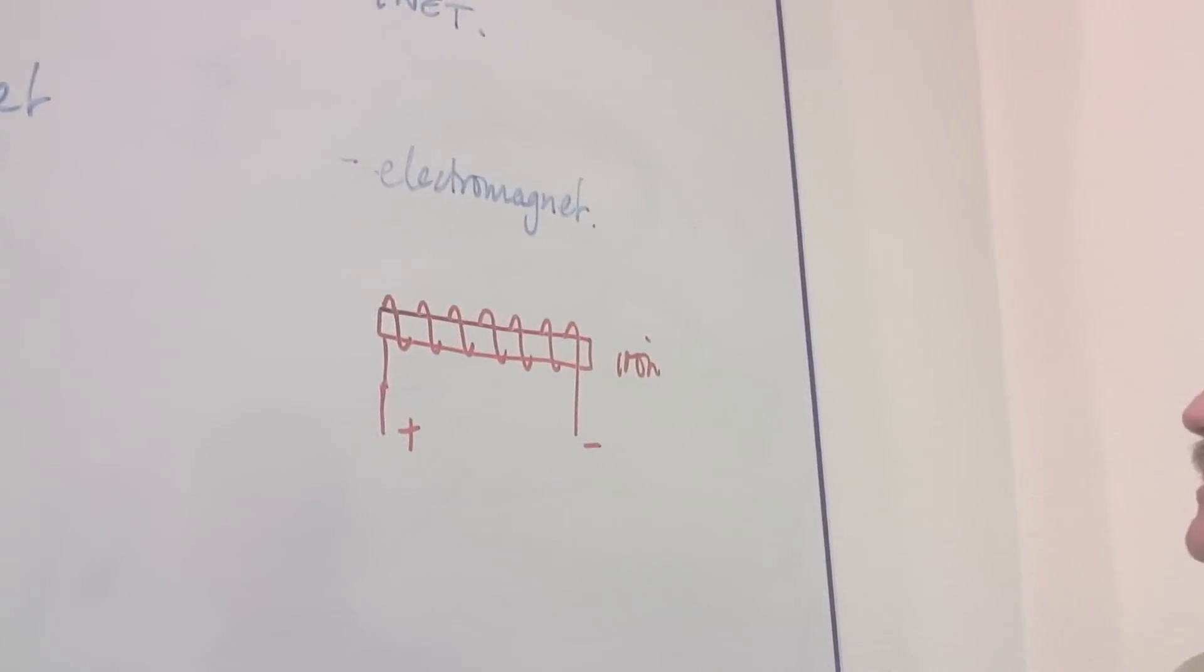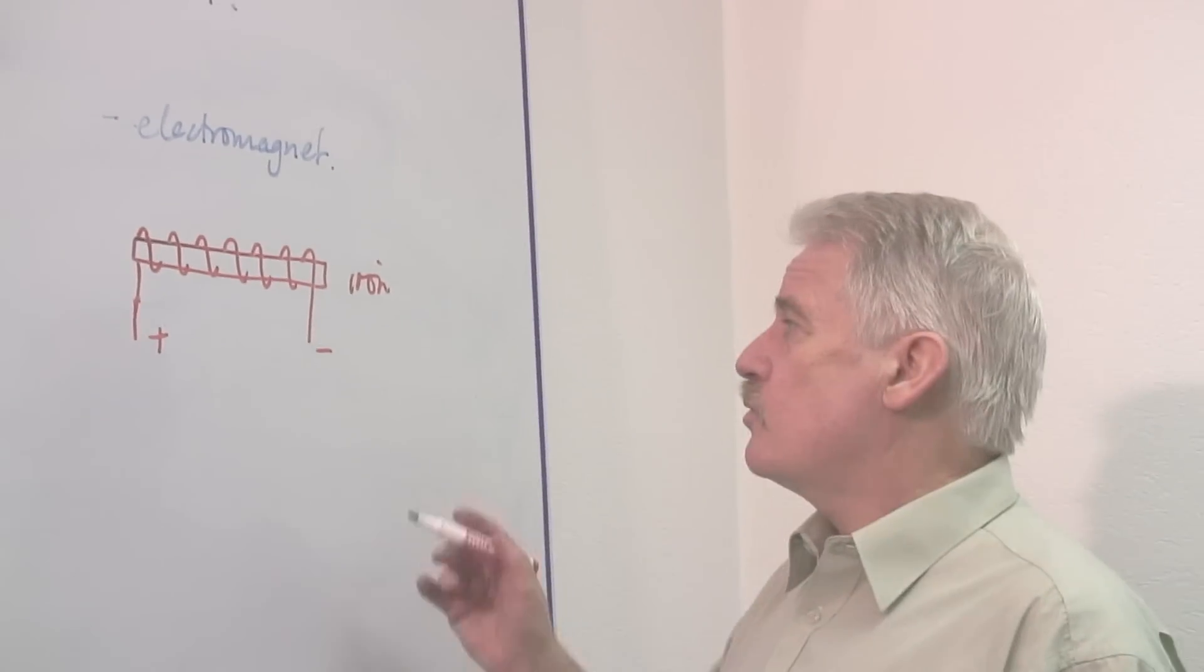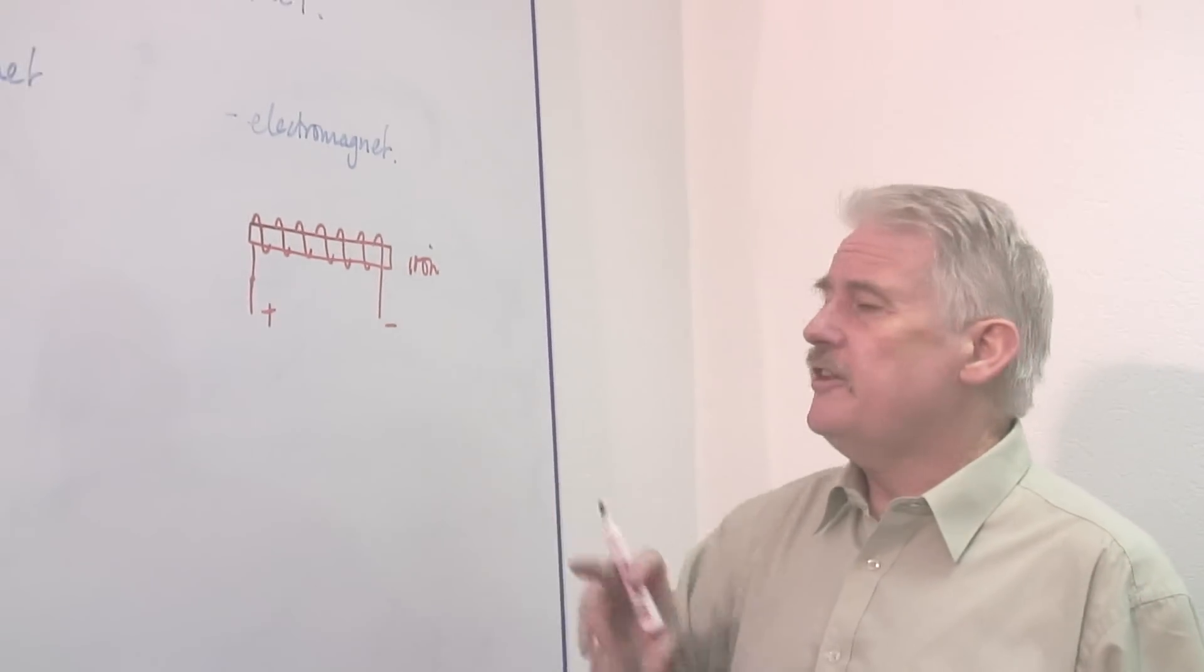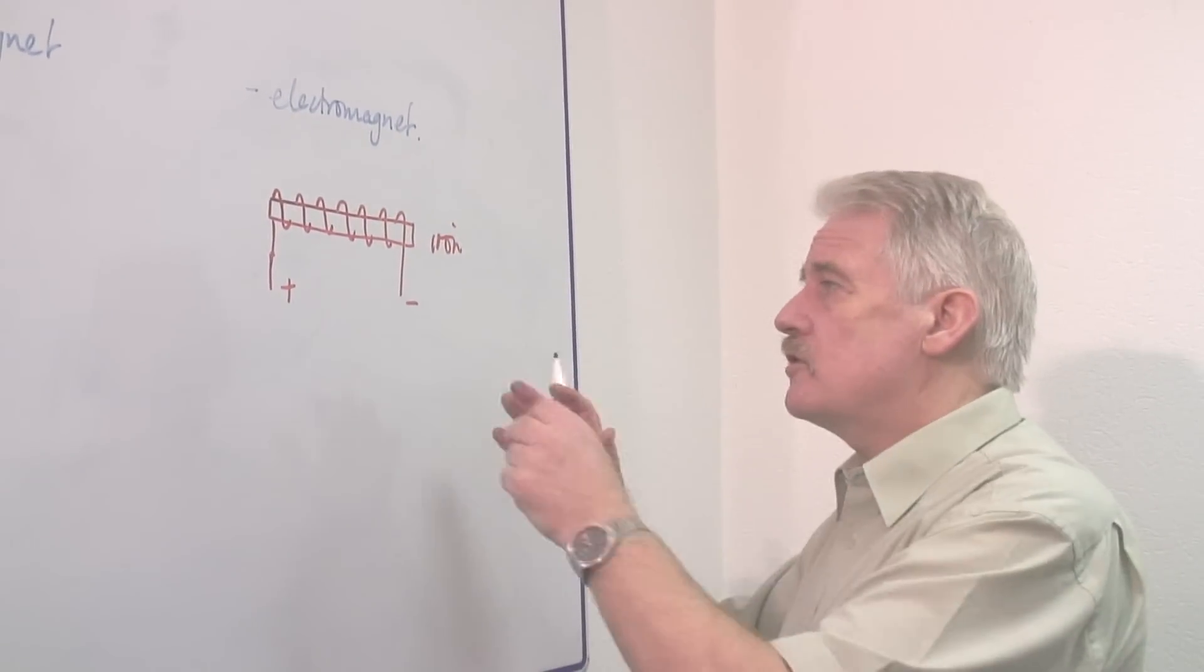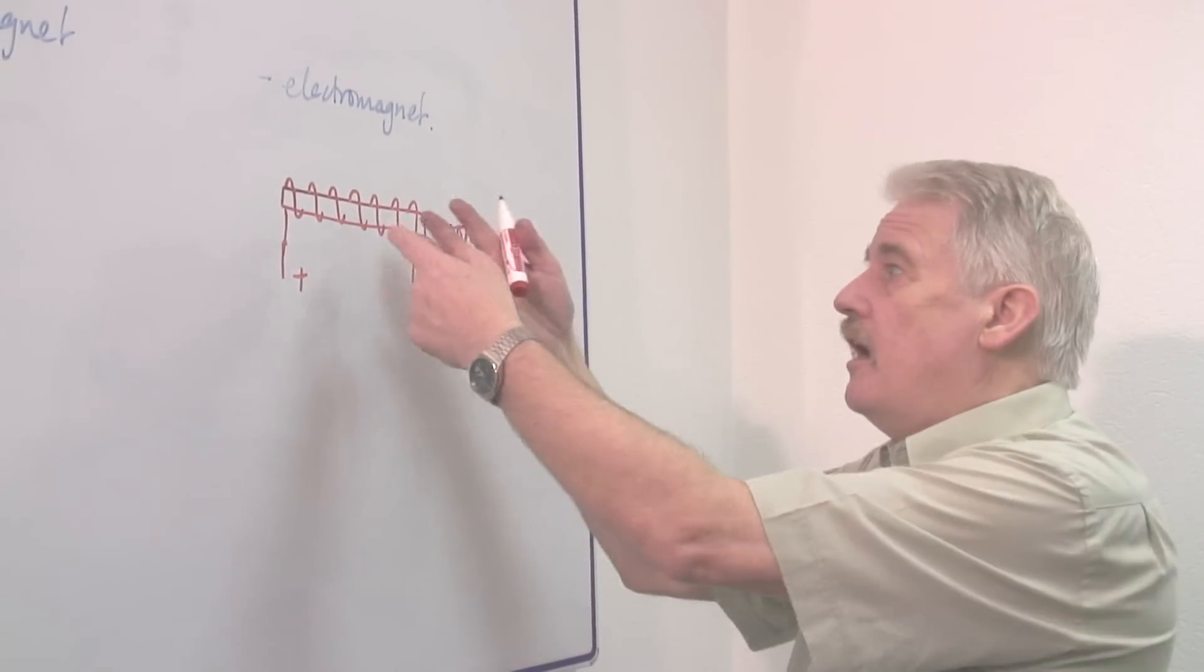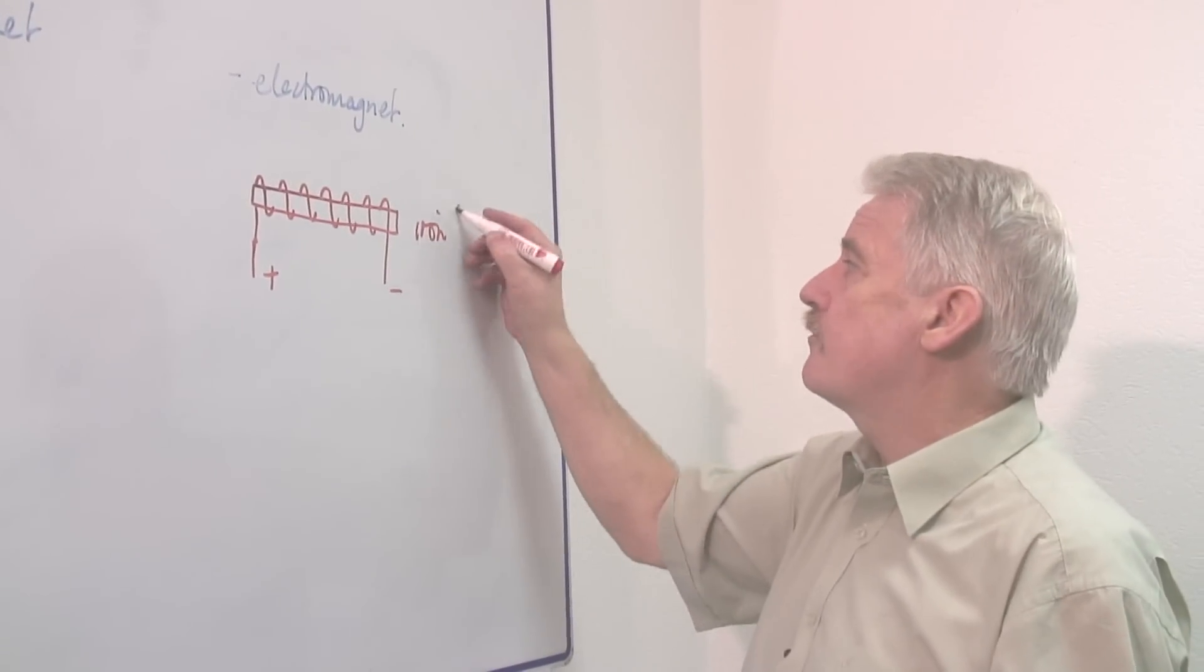The electromagnet is temporary, because when you switch on the current, the magnet becomes magnetic. And when you switch the current off, the iron, because of the nature, we call it soft iron.